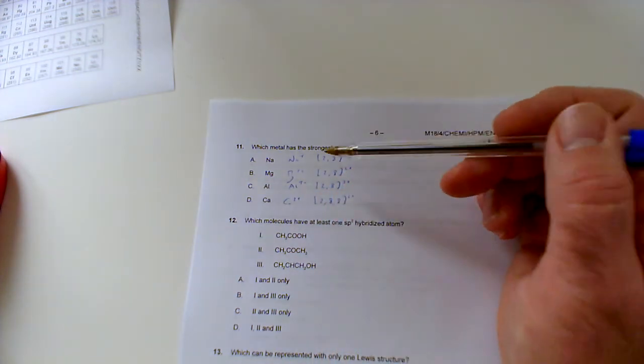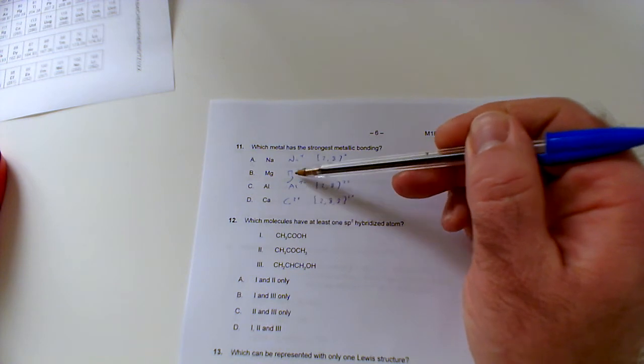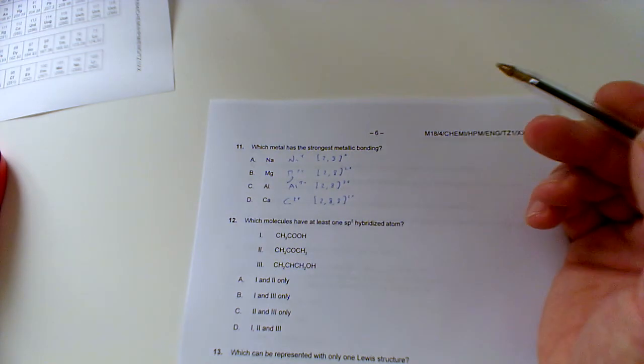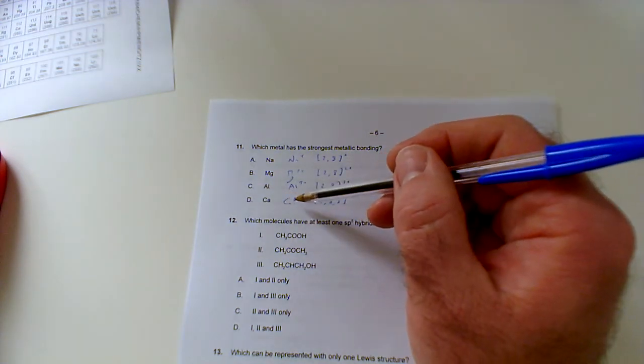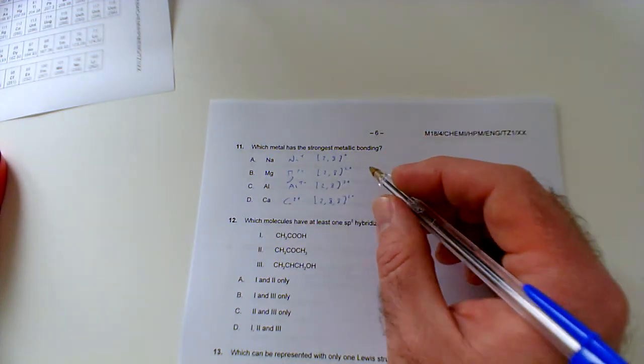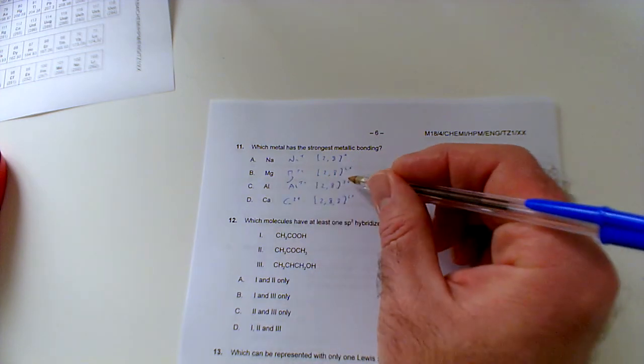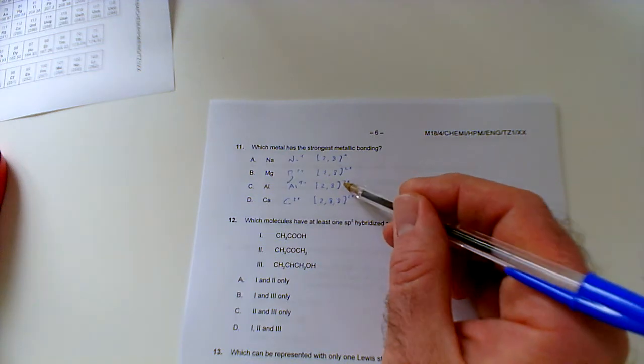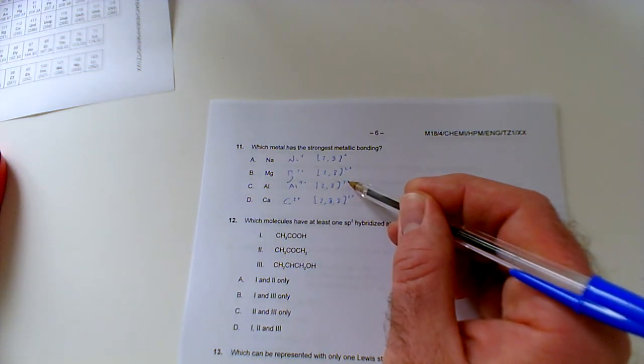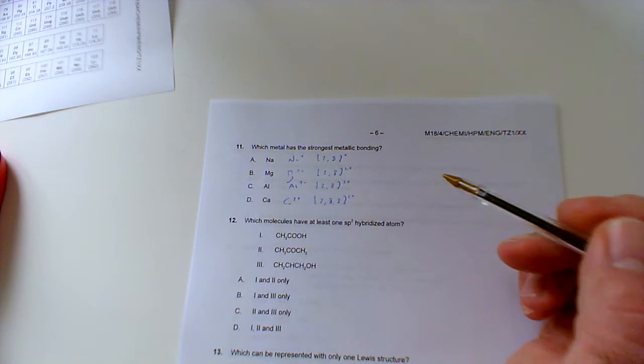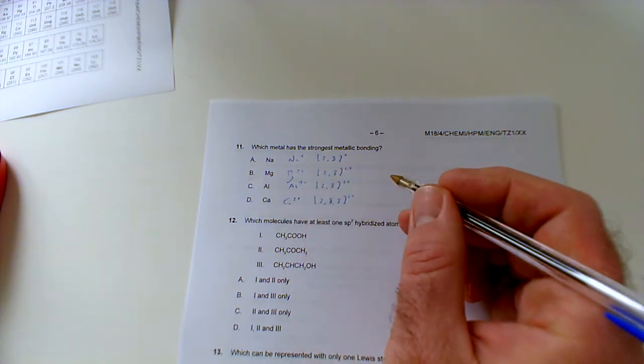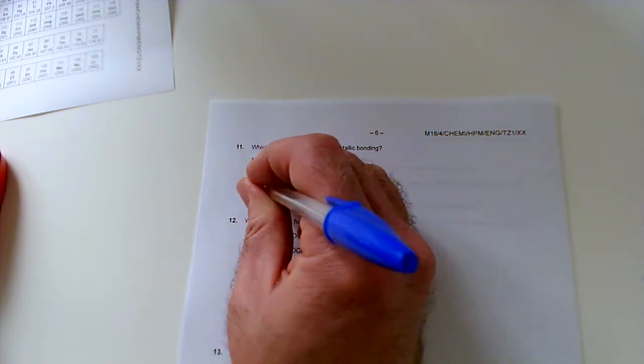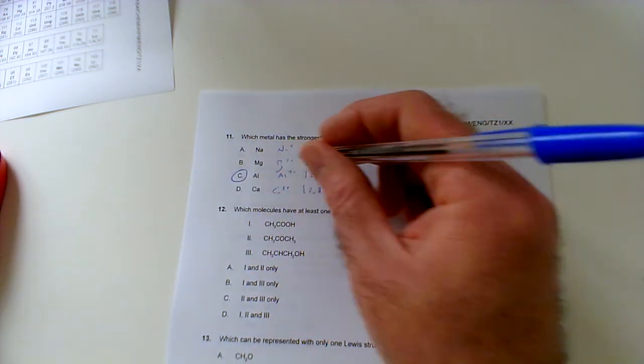Sodium will have weaker metallic bonding than magnesium because they're both two plus but it's a larger ion, so there'll be a greater distance between the positive nucleus and the sea of delocalized electrons. Our strongest metallic bonding is actually going to be aluminium because these three are all isoelectronic. They're all sort of two in the first shell, eight in the second shell, but this has got a bigger positive charge. It'll have three times the amount of delocalized electrons because of course each atom has lost three electrons and it's going to have the smallest ionic radius as well because it's got the biggest nuclear charge. So aluminium three plus will have the strongest metallic bonding.